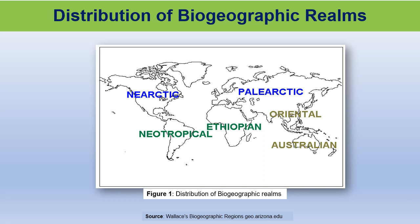It appears that the Palearctic realm basically includes North Asia, Europe, north of the Himalayas, Africa, and the northern and central part of the Arabian Peninsula. Nearctic realm includes North America down to the Mexican Plateau. Neotropical realm extends south from the Mexican deserts into South America. Ethiopian realm covers Africa south of the Sahara. Oriental realm includes Asia south of the Himalayas, and Australia and associated islands come under the Australian realm.